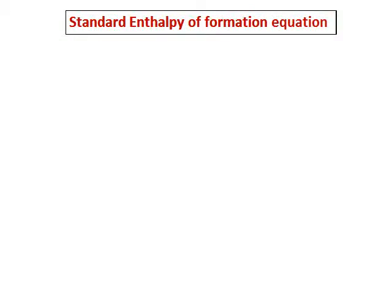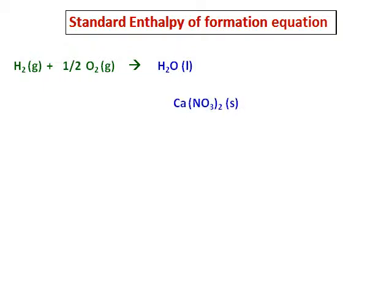Now let's write standard enthalpy of formation equations. For water liquid, it forms from hydrogen and oxygen in their standard states — hydrogen gas and oxygen gas. When balancing, you cannot place any coefficient on the product side, so I add half an oxygen on the reactant side.